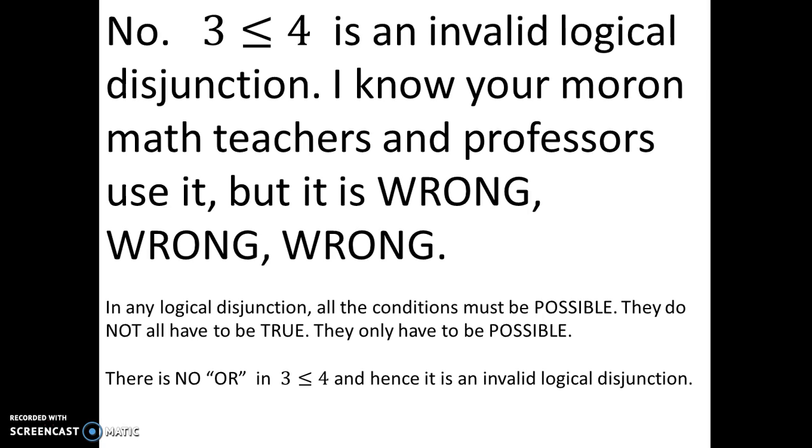In any logical condition, all the conditions must be possible. They do not all have to be true, and they're usually not in an or statement. They only have to be possible. There is no or in this logical disjunction. 3 is less than 4. It is never equal to 4. It can't be equal to 4. So it's an invalid disjunction. Be careful when you use logical disjunctions.